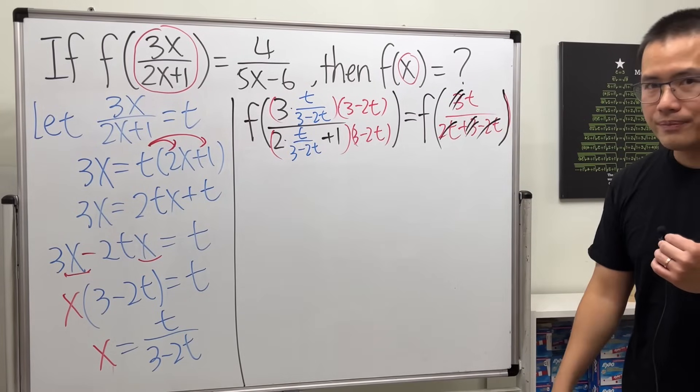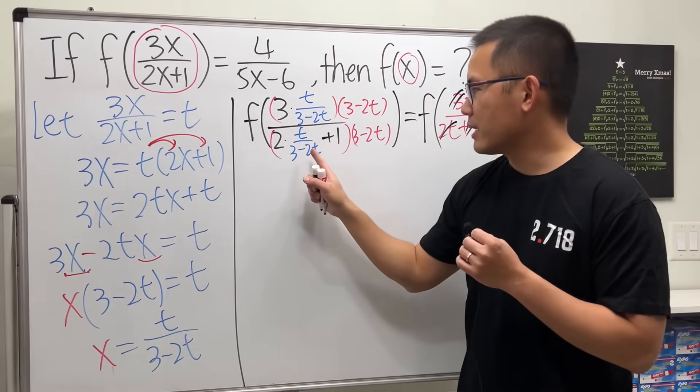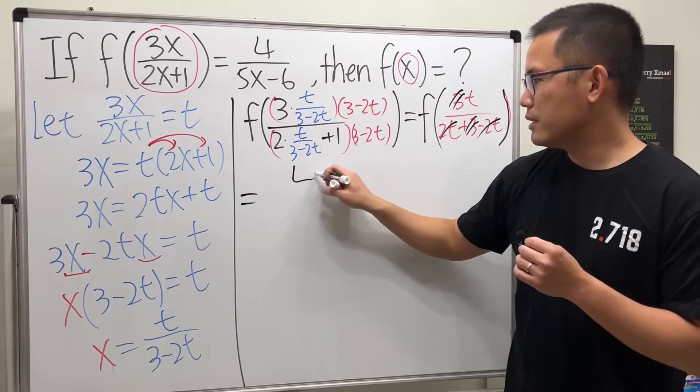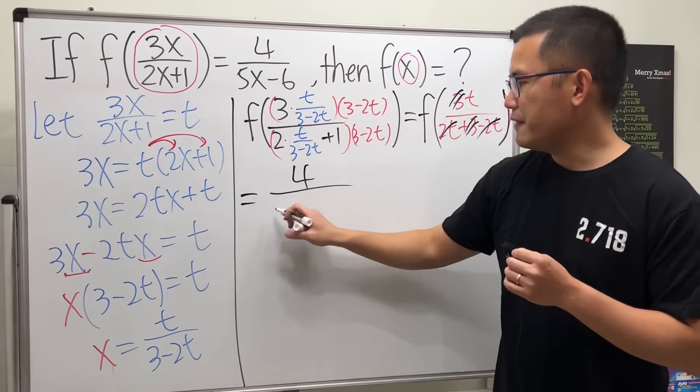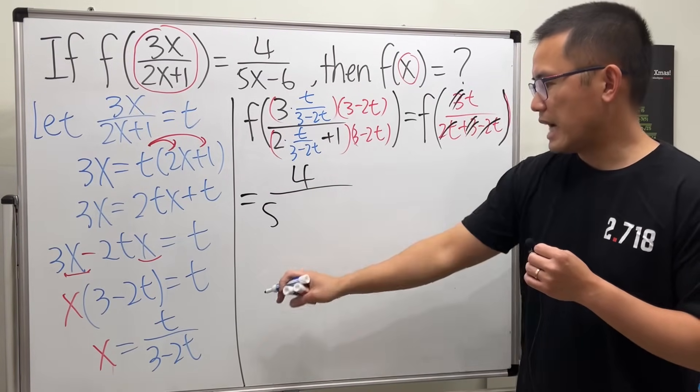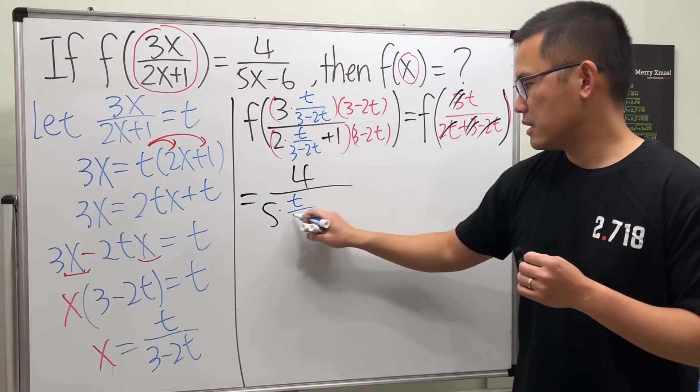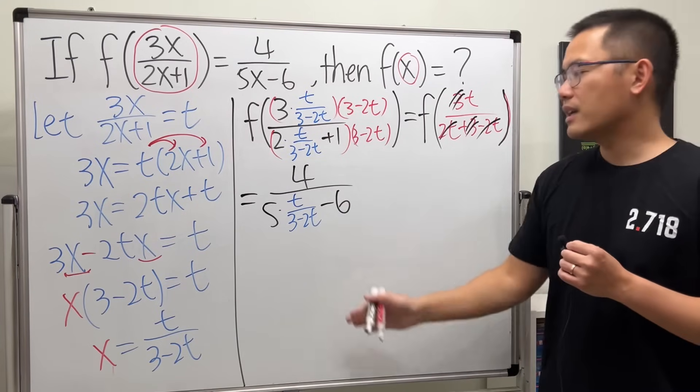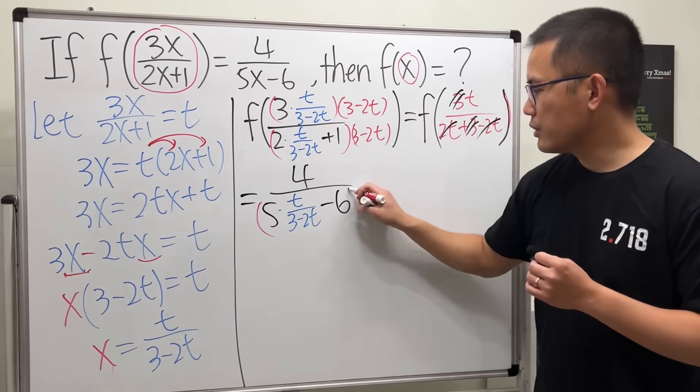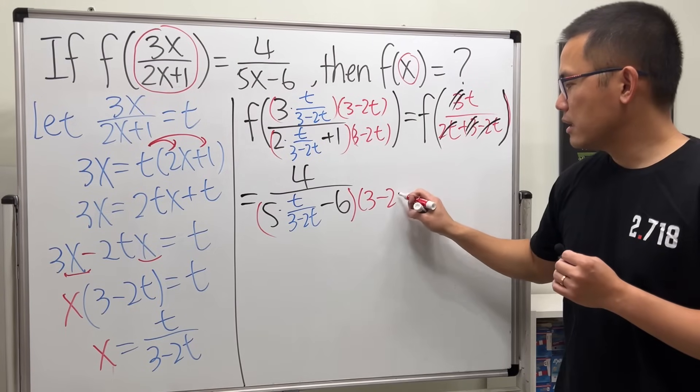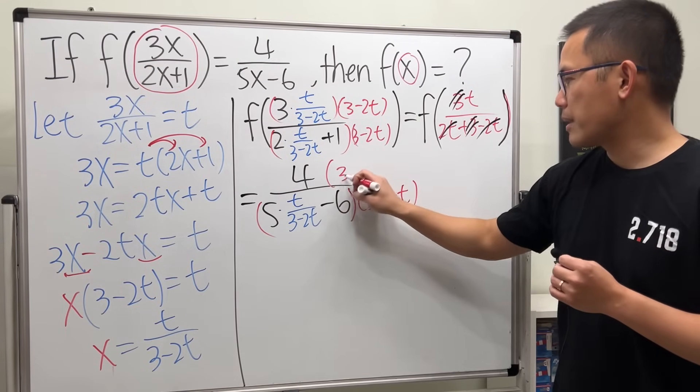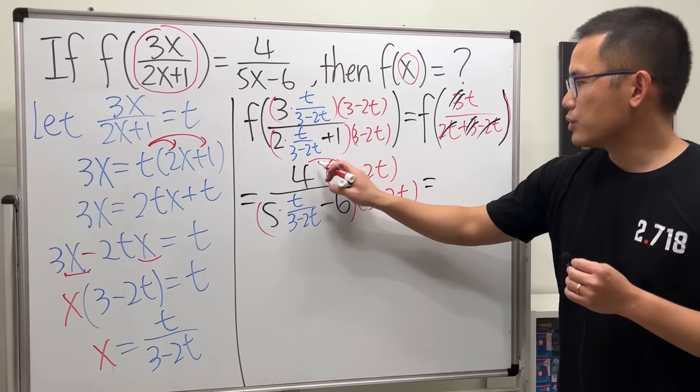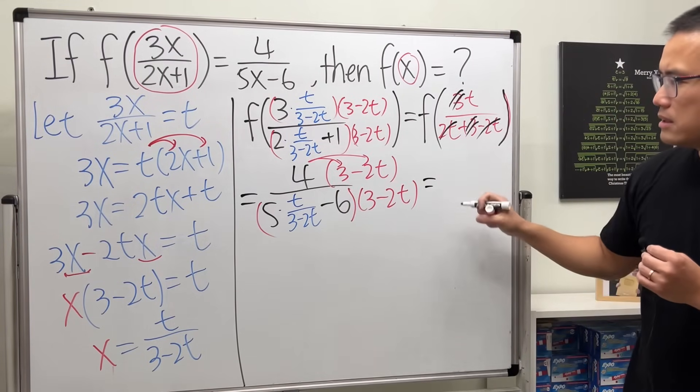As you can see, once we plug in the blue part into the x's, we'll just end up with f of a single variable. Then we're just going to plug this into this x and we'll be done. Have a look: here we have 4 over 5 times, and the x is that, minus 6. Again we have a complex fraction. Let's just go ahead and multiply this denominator on the bottom here and also the top here. We will get this times this is 12, and then this times that is minus 8t.